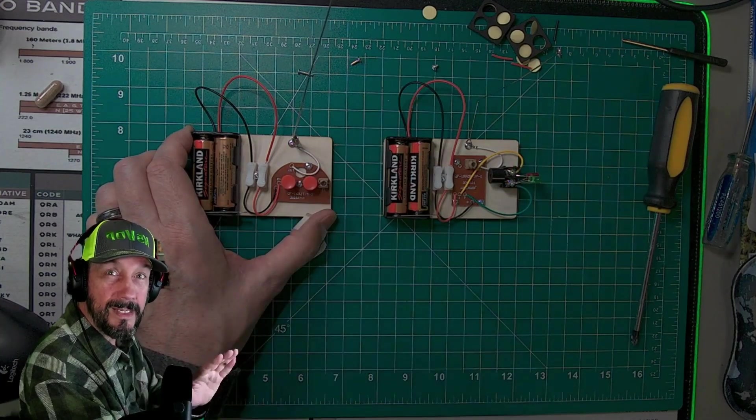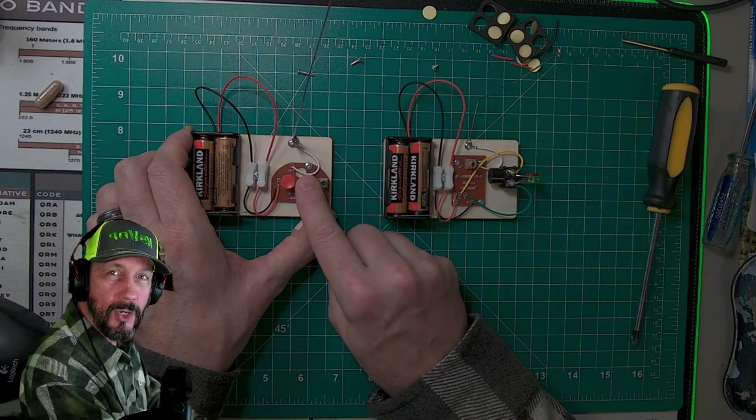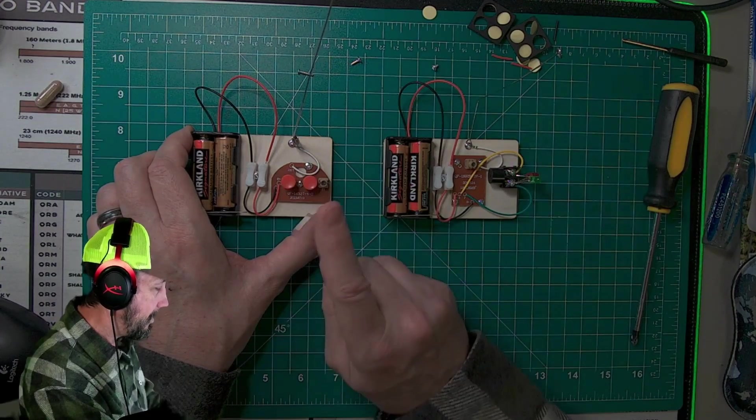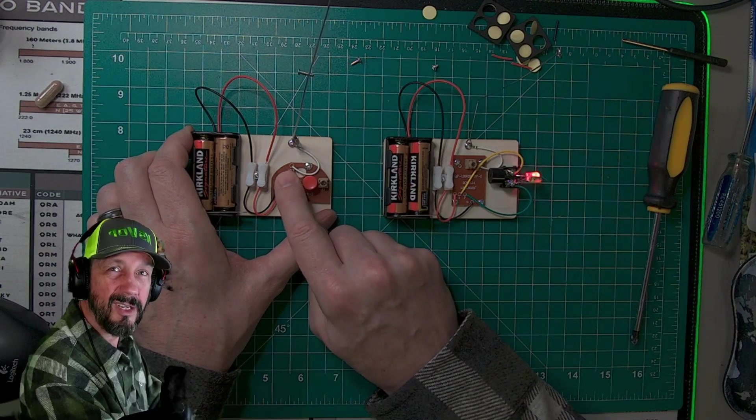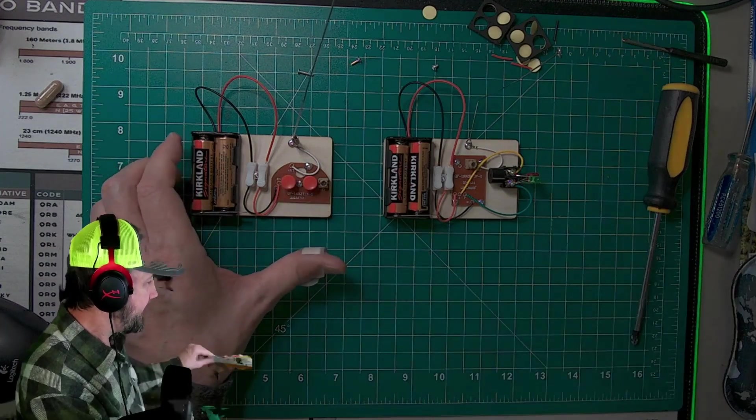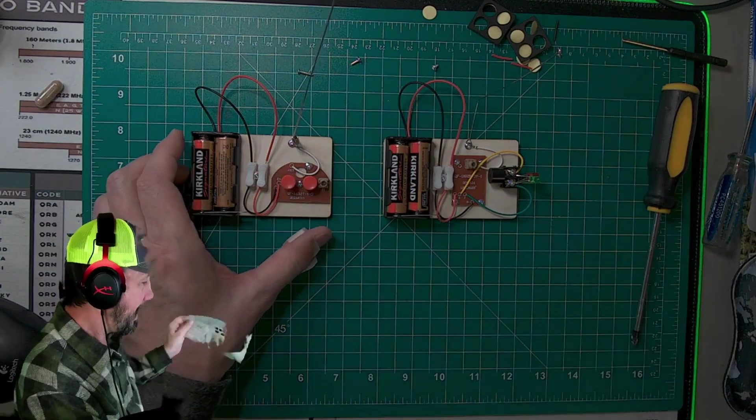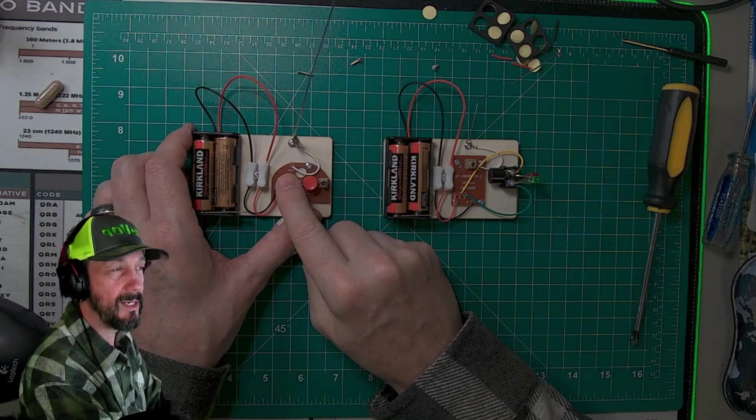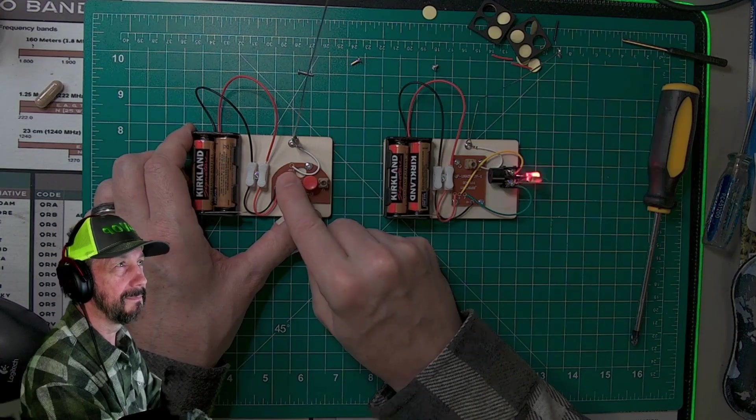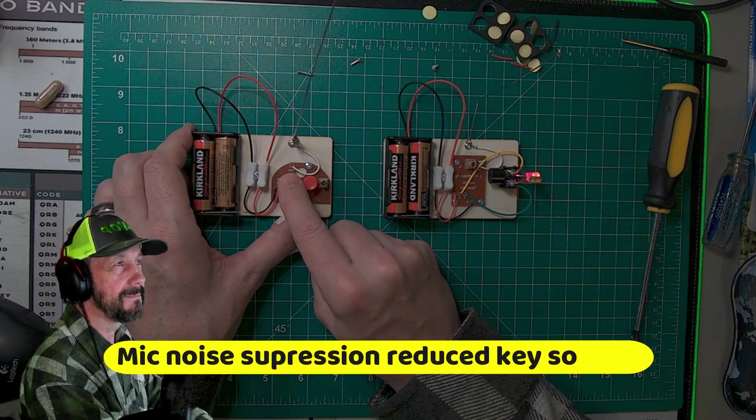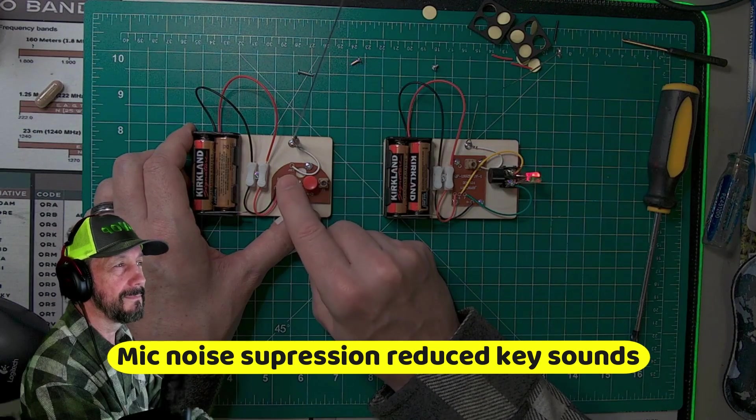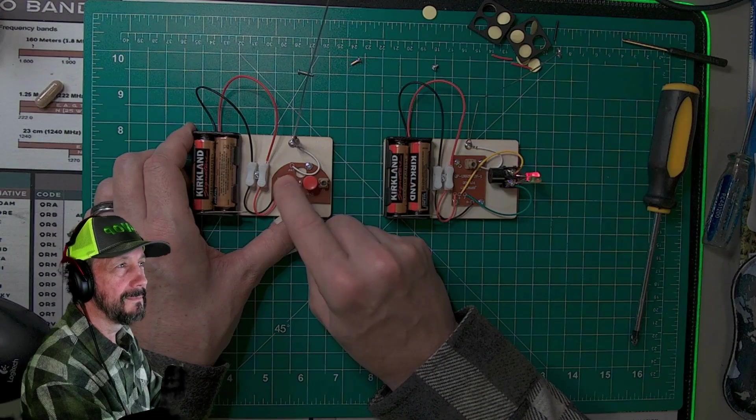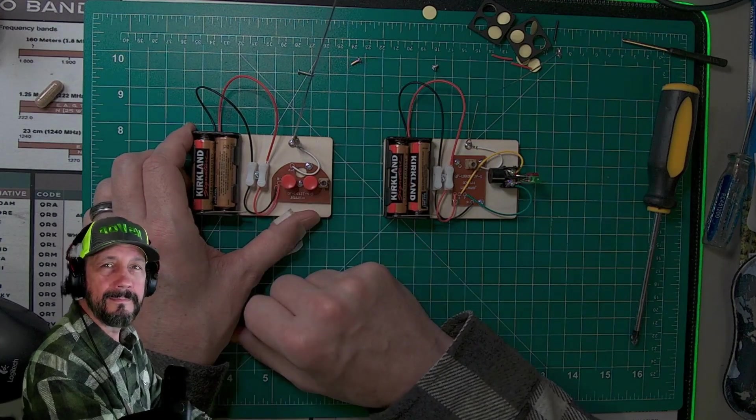So if you want to be stealth mode and be quiet, you can send a code to somebody and they can see it and nobody around can hear it. Or if you want to just make noise. There you go. So then you can take this little Morse code sheet and you can practice learning with either the light or the sound and light. So let's do my call sign. That's my call sign.